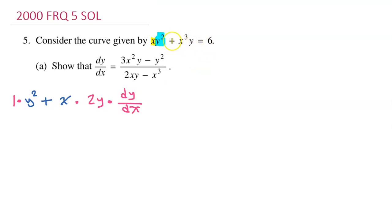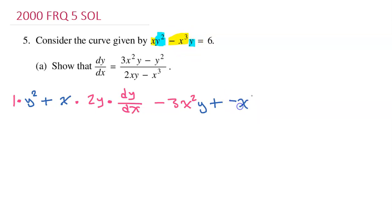Moving on to the next term. Again, it's going to be the product rule. Taking the derivative of the first factor, I'm going to have negative 3x squared, and then I'm leaving the second factor alone. And I put a plus. Now I go through it again — this time, I'm going to leave the other factor alone, so I have negative x to the third power. And I take the derivative of the second factor: the derivative of y is just dy/dx. And that is equal to 0, because the derivative of a constant is always 0.